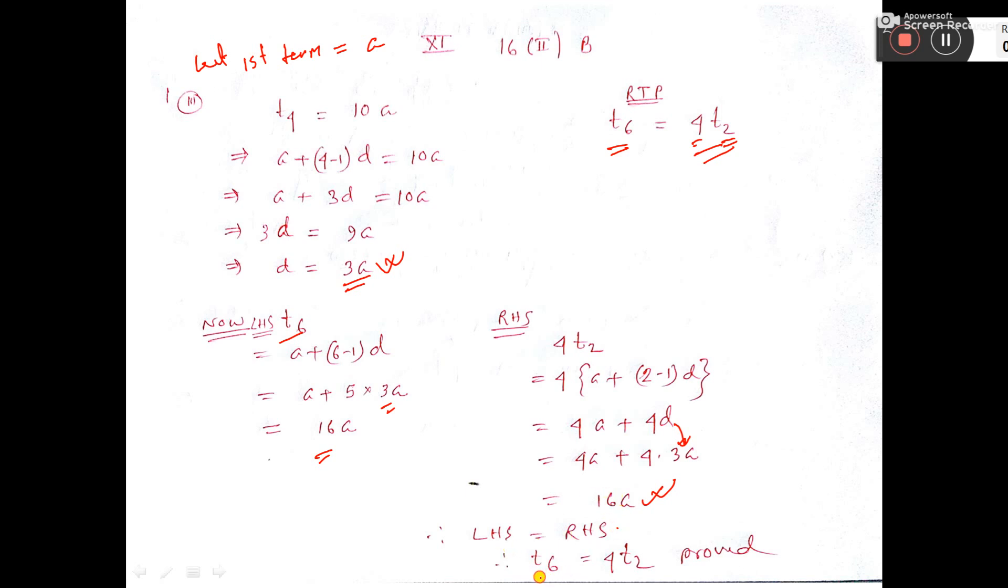So left hand side equals right hand side, which means the sixth term equals 4 into the second term. That is proved.